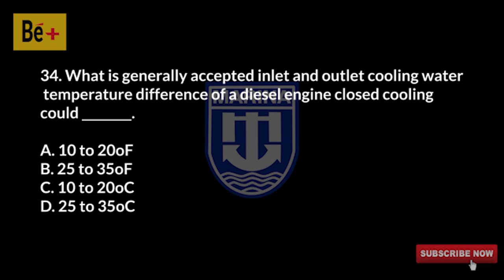What is the generally accepted inlet and outlet cooling water temperature difference of a diesel engine closed cooling system? A) 10 to 20 degrees Fahrenheit, B) 25 to 35 degrees Fahrenheit. The answer is A, 10 to 20 degrees Fahrenheit.